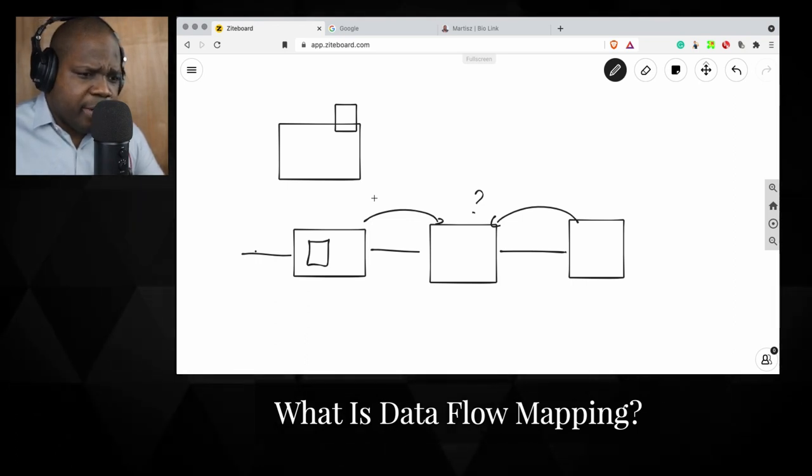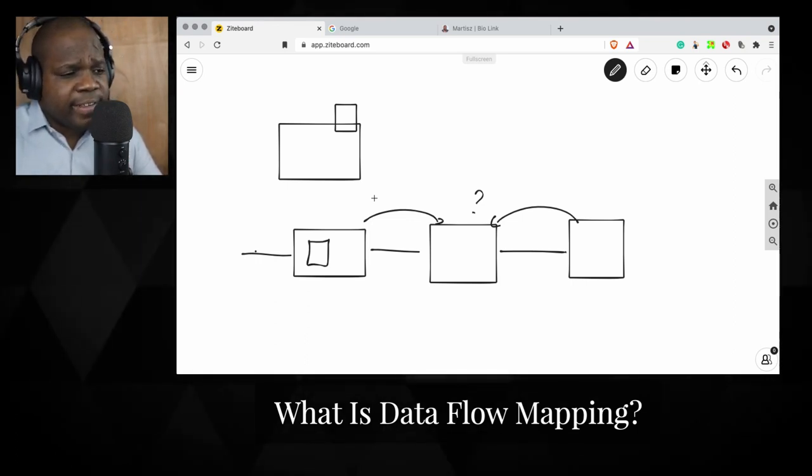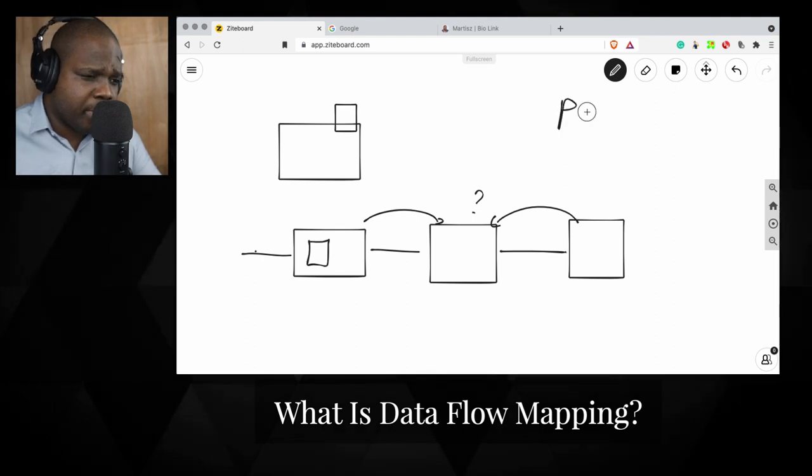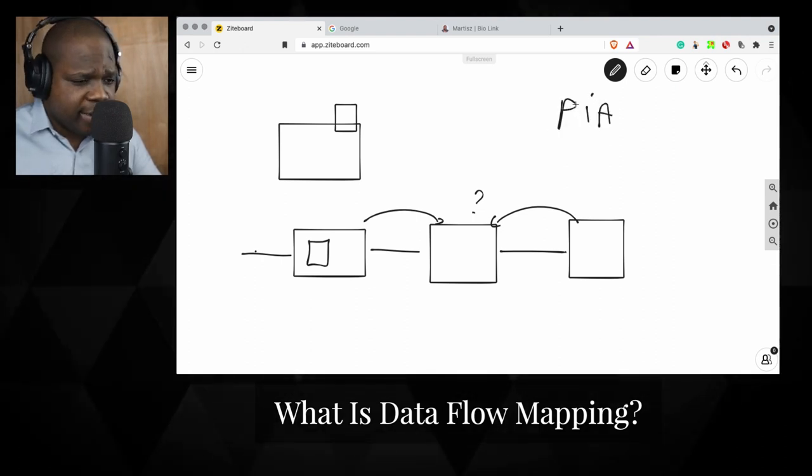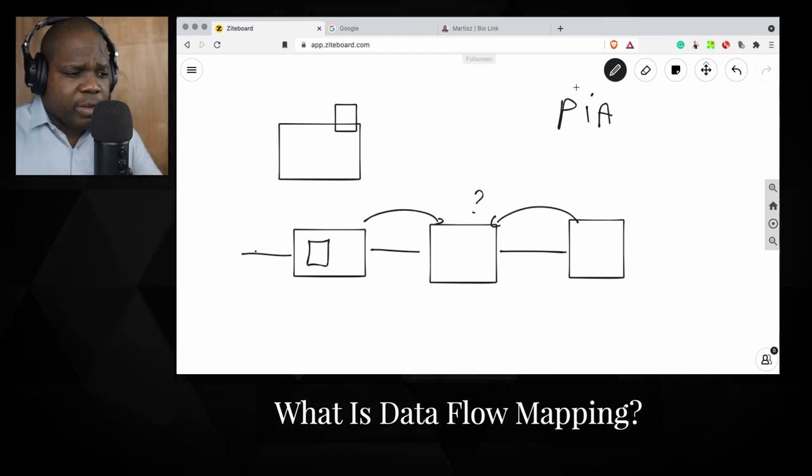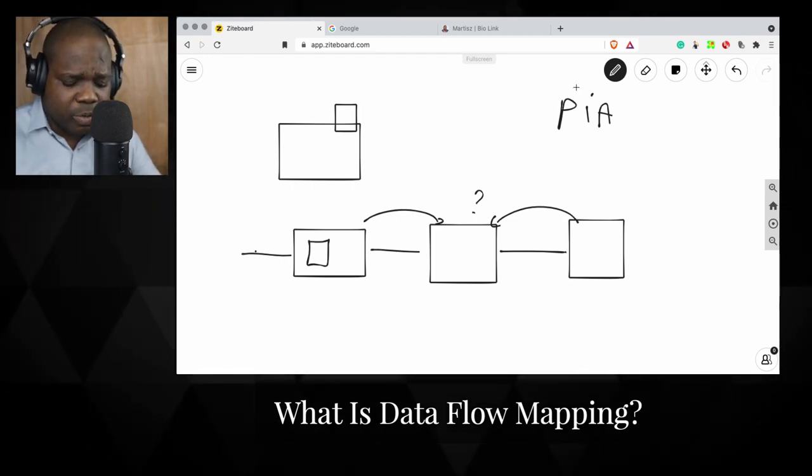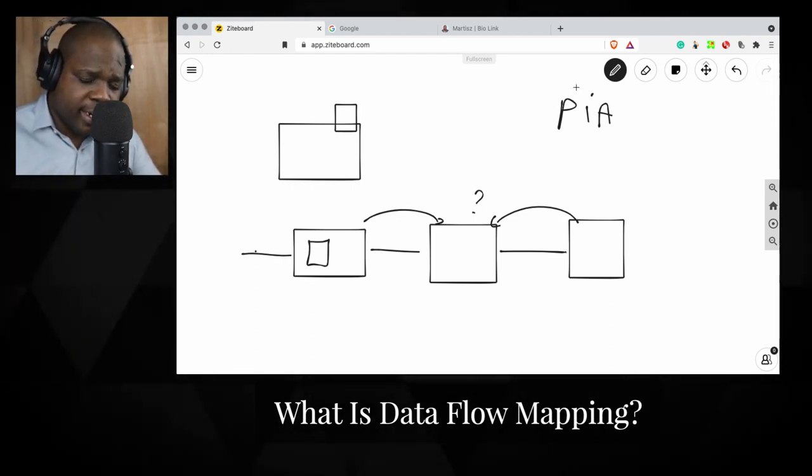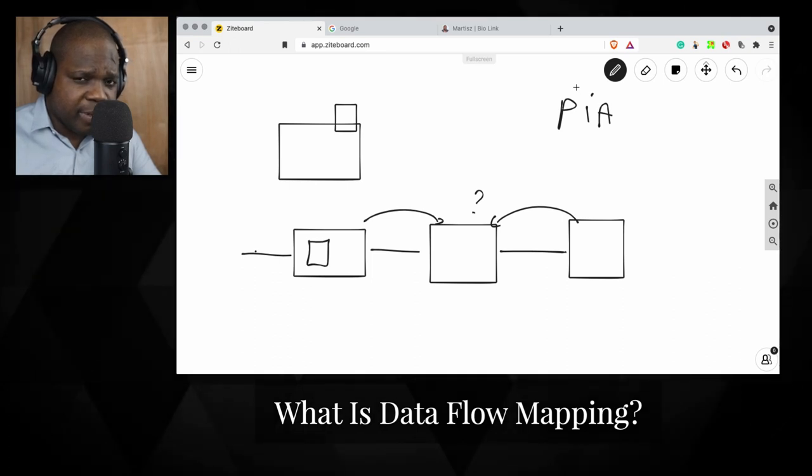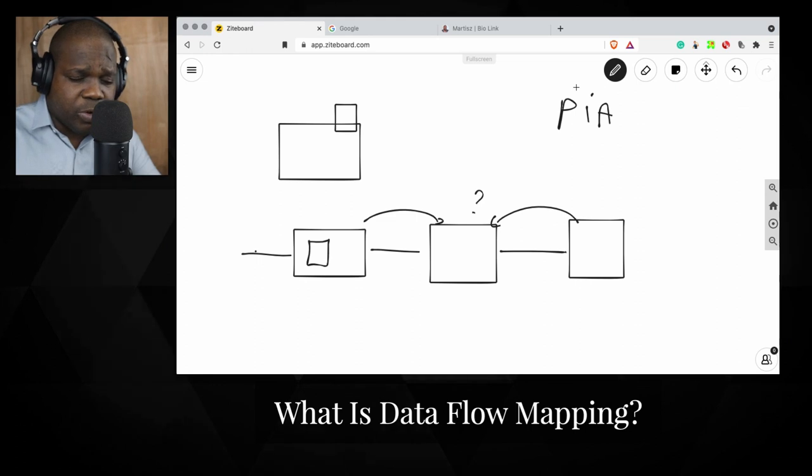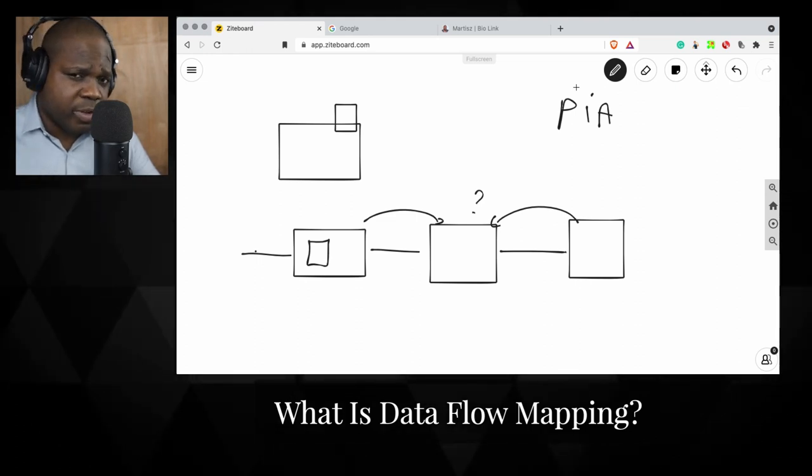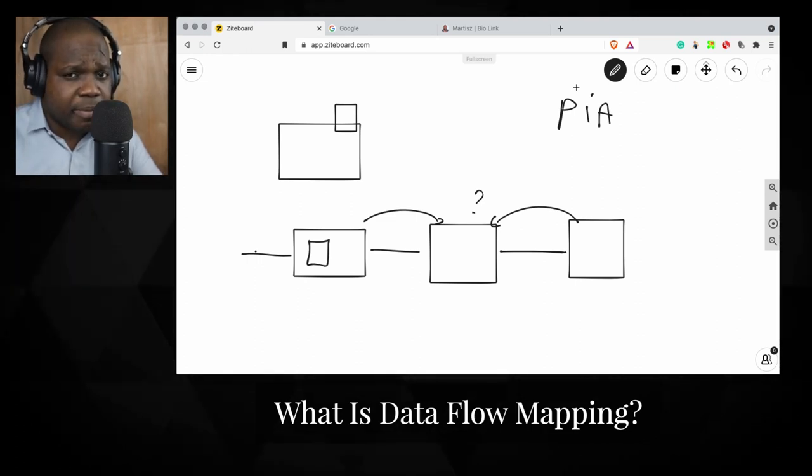So the data flow mapping is really important. But this is also important for the PIA privacy impact assessment. That means you do a privacy assessment, which data do I need? And based on those results, you can tell people, okay, I'm using those data for this and this. I meet the requirement of GDPR.